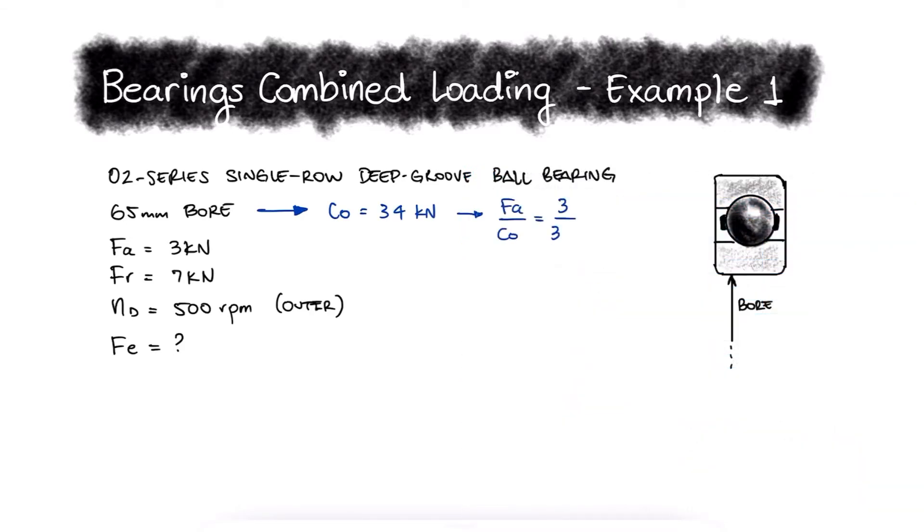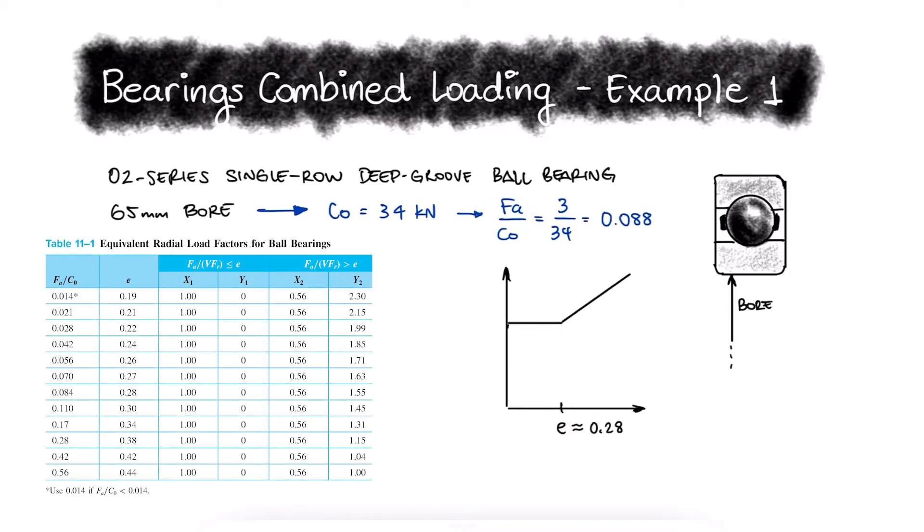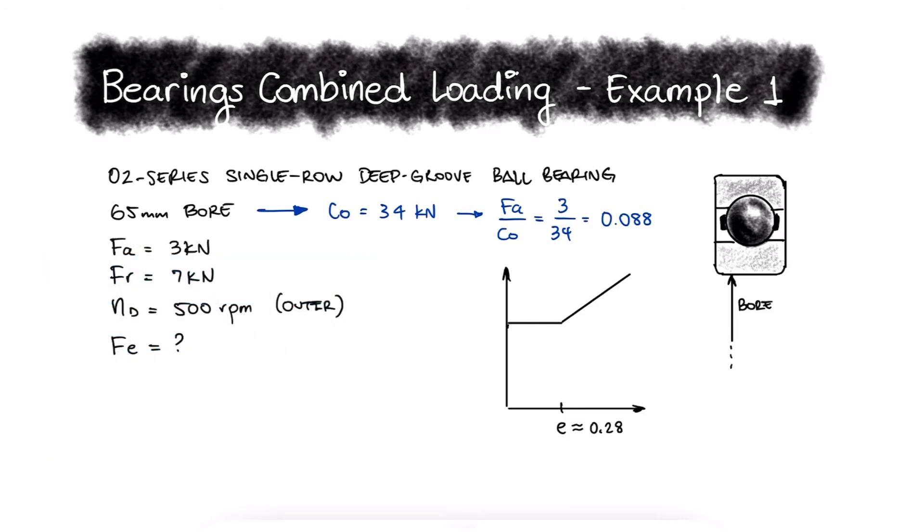We need this axial force to C0 ratio to find the location of abscissa E. For an FA over C0 ratio of 0.088, abscissa E would be only slightly higher than 0.28. If the value of the axial load over V times the radial load is higher than E, we know we'll use the capital X and capital Y coefficients to calculate the equivalent radial force.